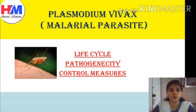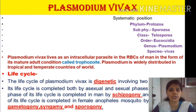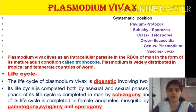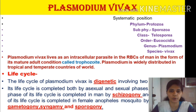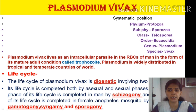Whenever we study the life cycle of any animal, we first study its systematic position. Plasmodium vivax belongs to phylum Sporozoa, class Telosporia, order Eucocidia, genus Plasmodium, and species vivax. Plasmodium vivax is used as an intracellular parasite — meaning it lives within the cell — in the erythrocytes of man, in its mature condition known as the trophozoite.